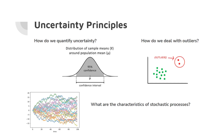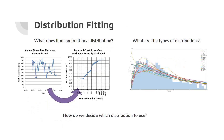For uncertainty principles, we are going to answer how do we quantify uncertainty, how do we deal with outliers, and what are the characteristics of stochastic processes? For distribution fitting, we are going to answer what does it mean to fit to a distribution, what are the different types of distributions, and how do we decide which distribution to use?